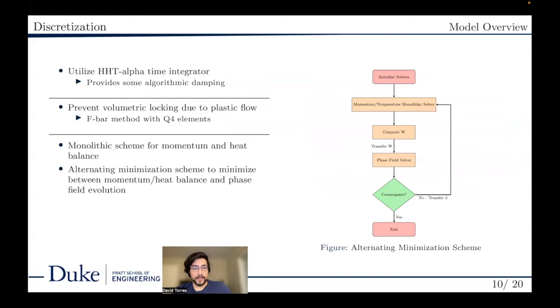A few key points about the discretization of our model. We utilize an HHT alpha time integration scheme to reduce the noise that comes with the inclusion of dynamics. Secondly, the isochoric nature of plasticity requires the implementation of a method to prevent volumetric locking in the quad 4 elements used in our model. We use an FR method with quad 4 elements to overcome this issue.